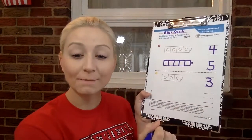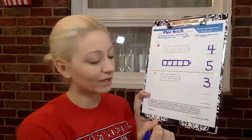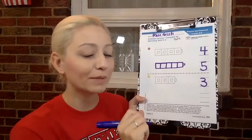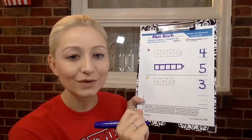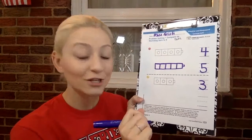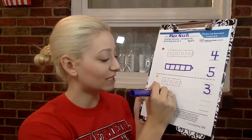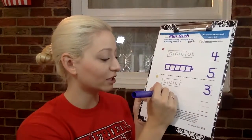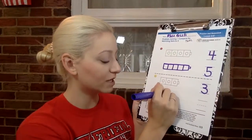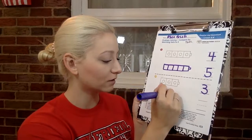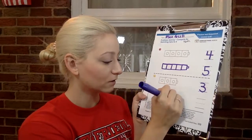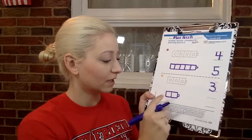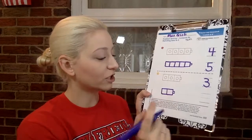Now we're gonna put a number less than three on our paper. So what number would be less than three? Two, good. Let's write the cubes of two: one, two. There's two cubes.